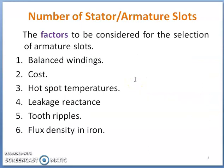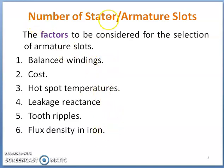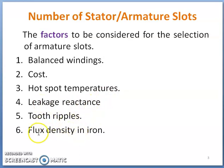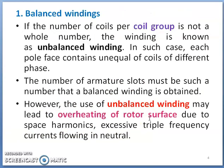Let us discuss the factors to be considered for the selection of armature slots or stator slots. Six factors are taken as reference to decide the number of stator slots: balanced winding, cost, hot spot temperature, leakage reactance, tooth ripples, and flux density in the iron. We will discuss these one by one.